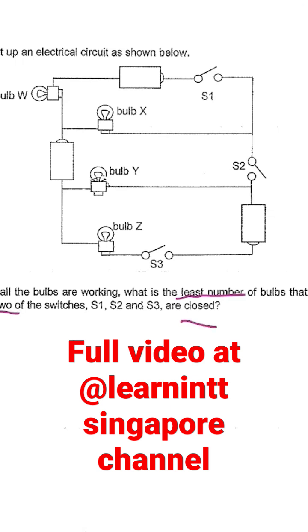So let's try out the first combination. Let's try to have switch one and switch two closed. So after we close them, this is how the electricity would flow. So we will see that bulb W and bulb Y will light up.